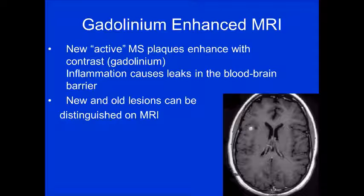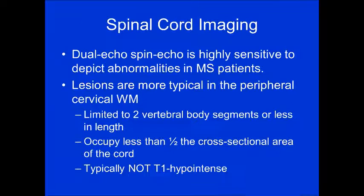Gadolinium-enhanced MRI is done to look for active MS plaques — it identifies the breakdown of the blood-brain barrier. New and old lesions can be distinguished this way. Old lesions can also reactivate, so a stable number and morphology doesn't mean activity won't recur — that has been known to happen.